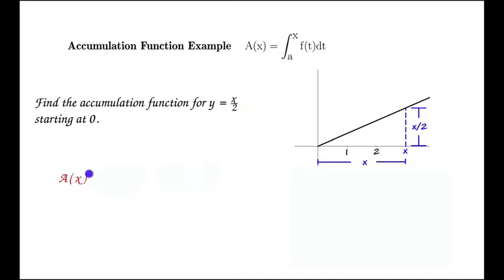So if we want to find the accumulation function as a function of x, that's going to be equal to the integral. Since we're starting at 0, it's going to be the integral from 0 to x. And our function is going to be t over 2. So we replace that x over 2 with a t.